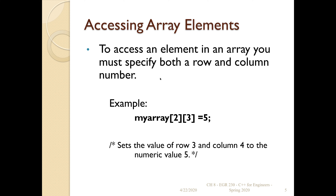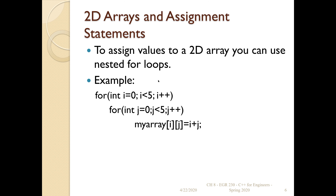How do you access a specific element in an array? You specify the name of the array, the row number, and the column number. What you recognize here is it's the third row and fourth column — because the first row and first column start at zero and zero. When you want to assign values to every element in a two-dimensional array, you can use a loop. With a two-dimensional array, you need to use a nested loop to access or set all those elements.